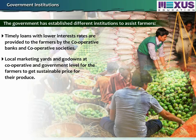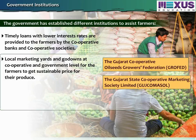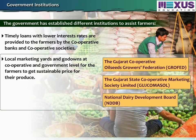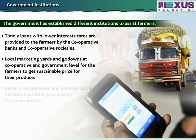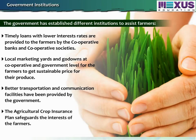The government has established different institutions to assist farmers, including cooperative banks and cooperative societies that provide timely loans with lower interest rates. Local marketing yards and go-downs at cooperative and government level help farmers get sustainable prices for their produce. For example, the Gujarat Cooperative Oil Seeds Growers Federation (GrowFed), the Gujarat State Cooperative Marketing Society Limited (Guj Comasol) and National Dairy Development Board (NDDB) buy farm products from farmers at sustainable prices. Better transportation, communication facilities and the Agricultural Crop Insurance Plan also safeguard the interests of farmers.